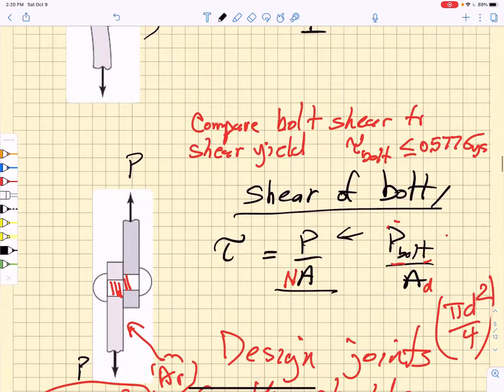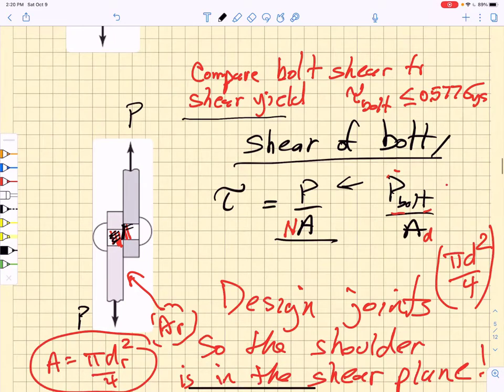We're going to focus on bolt shear-out, and we can have shear yield of the bolt. So the shear of the bolt is just going to be the load that we are applying divided by the cross-sectional area of the bolts times the number of bolts that are shearing the load, or the load per bolt divided by the nominal diameter of the bolt.